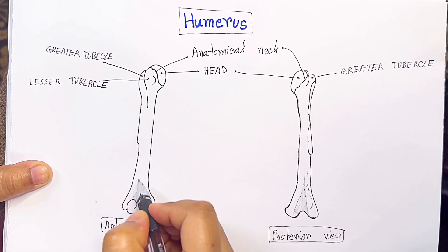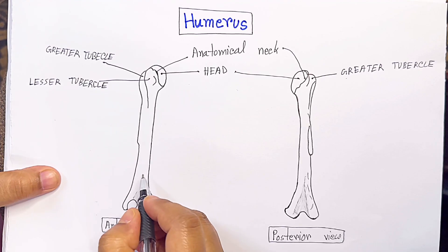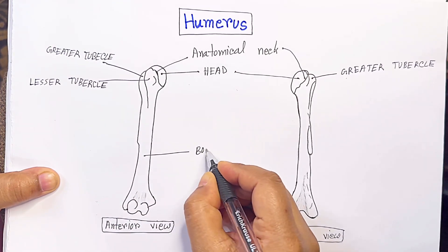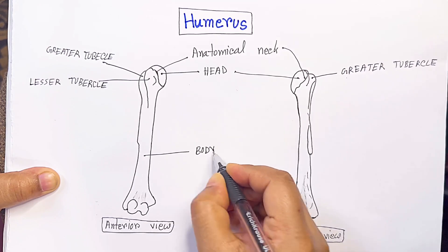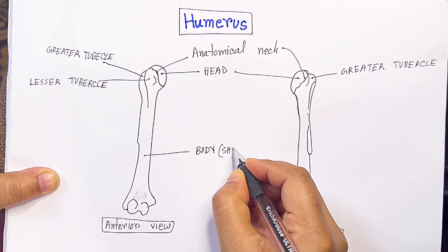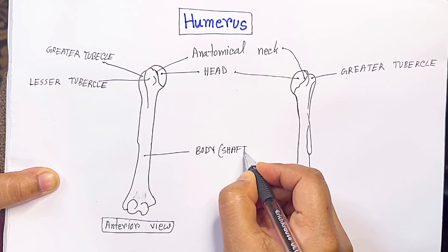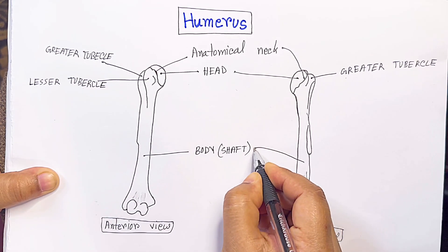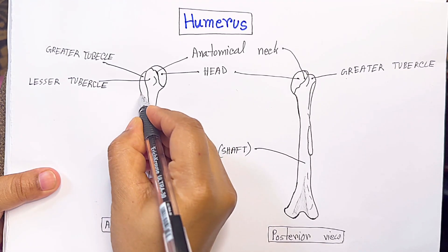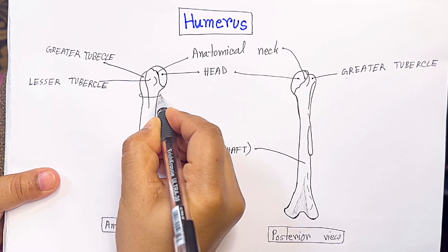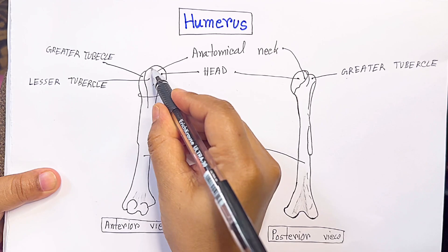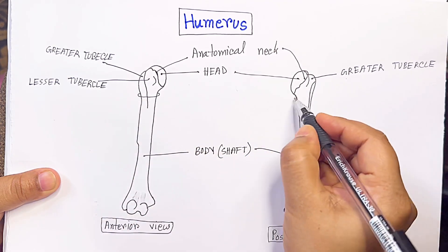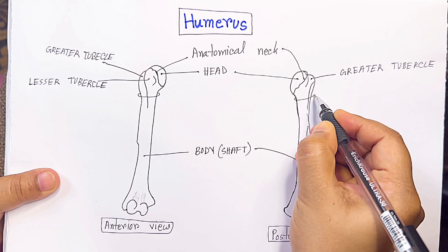Now this is the body or shaft of the humerus. And this is the surgical neck. We can see here — this is the anatomical neck and this is the surgical neck.